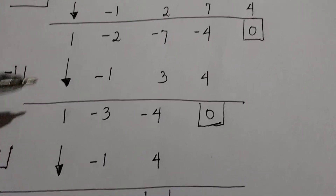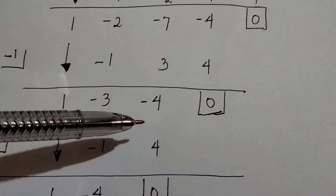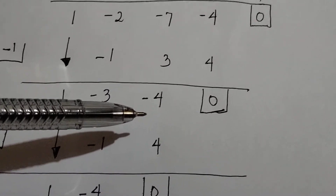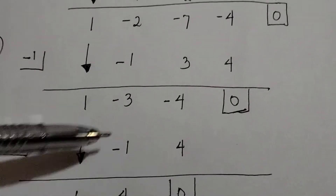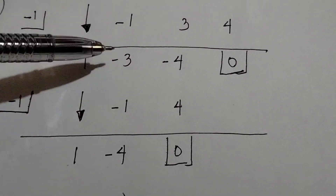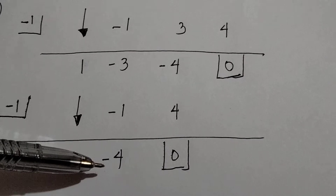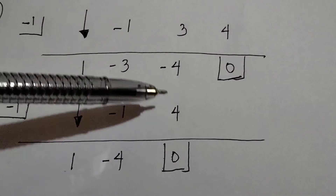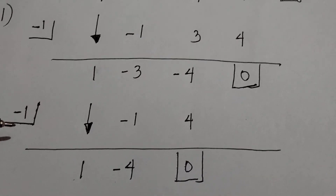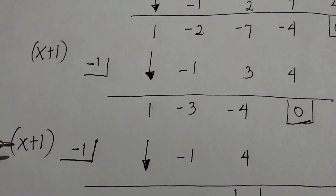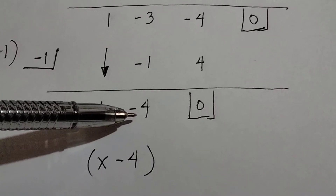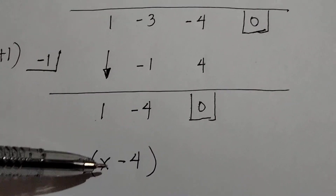Let's continue. Negative 4 is still the constant, so the possible rational roots are positive or negative 1, positive or negative 2, positive or negative 4. Let's choose negative 1 again. Bring down 1. 1 times negative 1 is negative 1. Negative 3 plus negative 1 is negative 4. Negative 4 times negative 1 is 4. Negative 4 plus 4 is 0, so negative 1 is one of the rational roots and the linear factor is x plus 1. The remaining coefficients are 1 and negative 4, which is already linear: x minus 4.